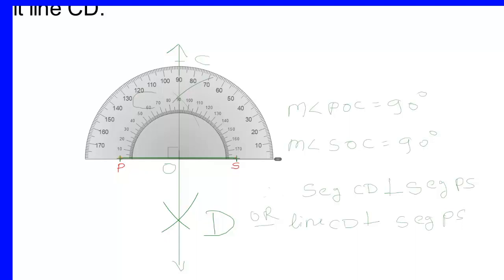Here, segment PO is equal to segment SO, confirming that O is the midpoint of PS and that CD is the perpendicular bisector of line segment PS.